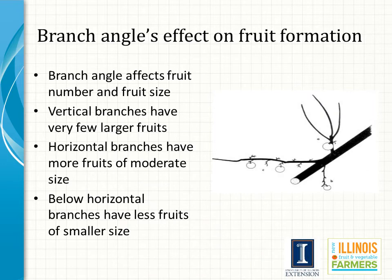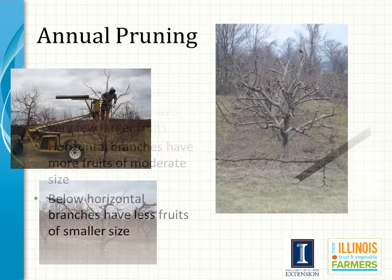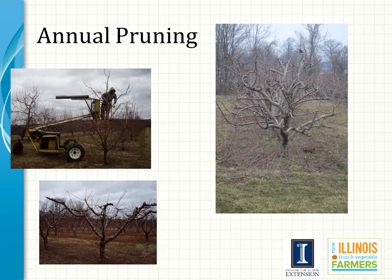Once fruit trees have been trained to a specific training system, the goal of annual pruning is to maintain that shape, increase light penetration into the canopy, improve fruit color, and increase fruit bud formation for the next year's crop.